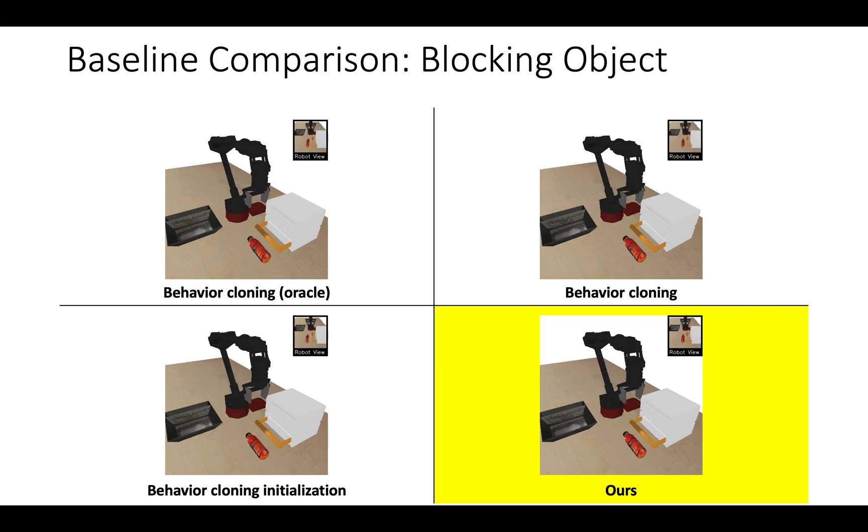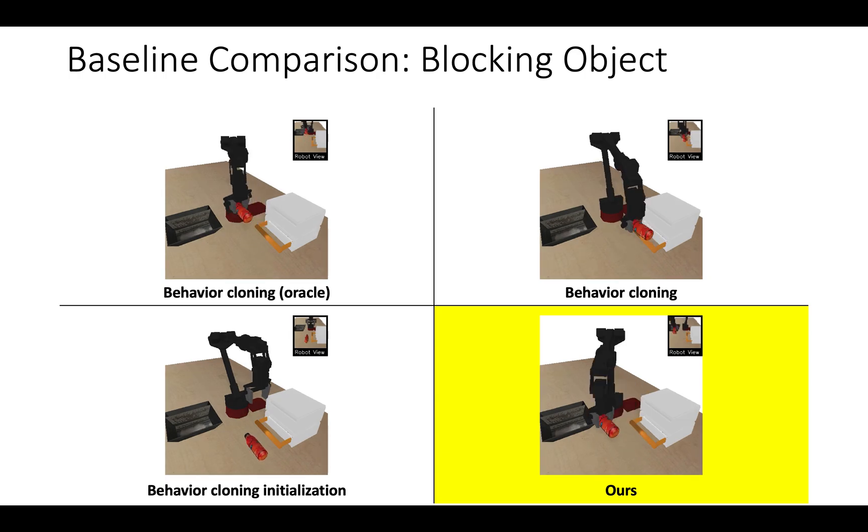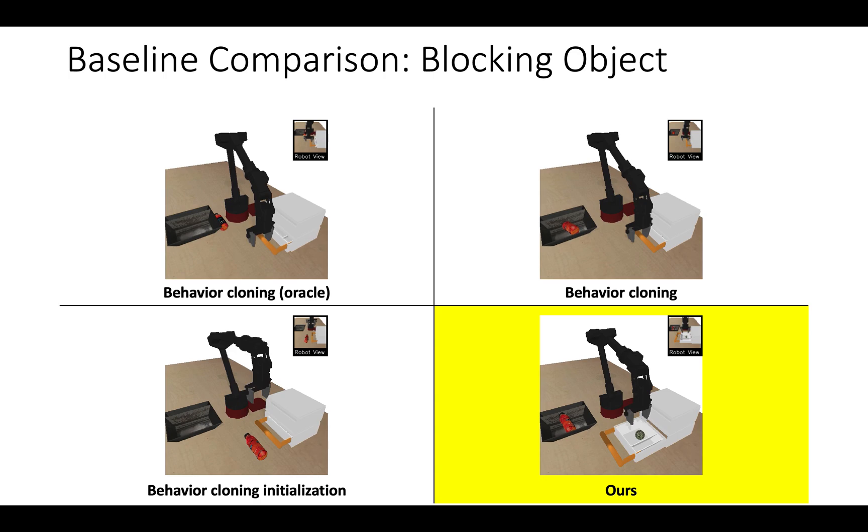We compare our method to previous works that incorporate prior data, such as initializing from behavior cloning. We see that for novel initial conditions such as where the drawer is blocked by an object, only our method is able to consistently solve the task.